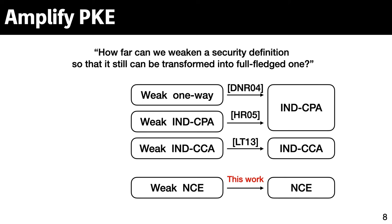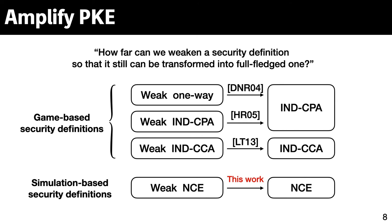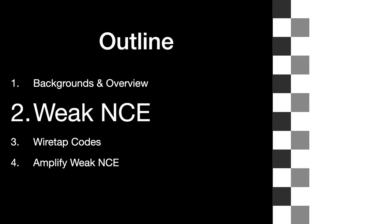I also mention another line of research, which asks a natural question: how far can we weaken a security definition so that it still can be transformed into full-fledged security? Weak forms of one-wayness, IND-CPA, and IND-CCA security are considered so far, and studied how to amplify them to full-fledged IND-CPA or IND-CCA security. This work can be seen as part of this line of research in the case of non-committing encryption. The difference is that previous weak security notions are defined in the game-based manner, while we define Weak-NCE in the simulation-based manner. Next, I'm going to explain how we define Weak-NCE and why our NCE scheme is Weak-NCE.